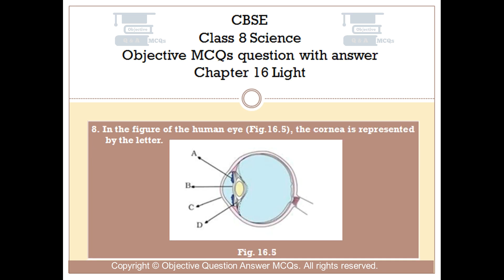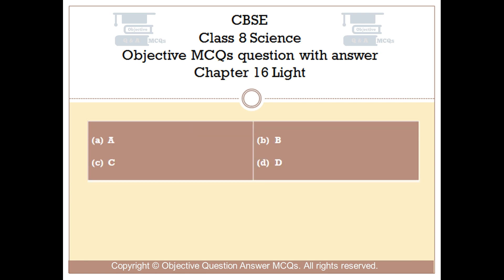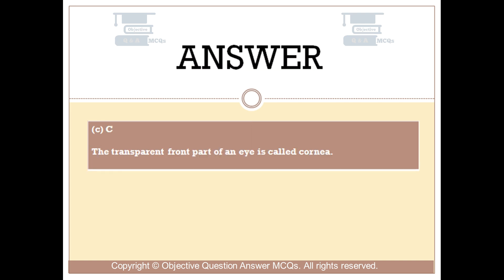Question number 8: In the figure of the human eye, the cornea is represented by which letter? Option A: A. Option B: B. Option C: C. Option D: D. The right answer is option C. The transparent front part of the eye is called the cornea, represented by C.